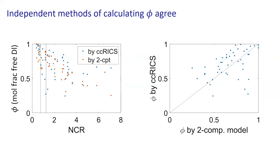Just to summarize what we can do with RICS: we can measure the dorsal diffusivity, its absolute concentration, and the fraction of dorsal that is actually bound to the DNA.